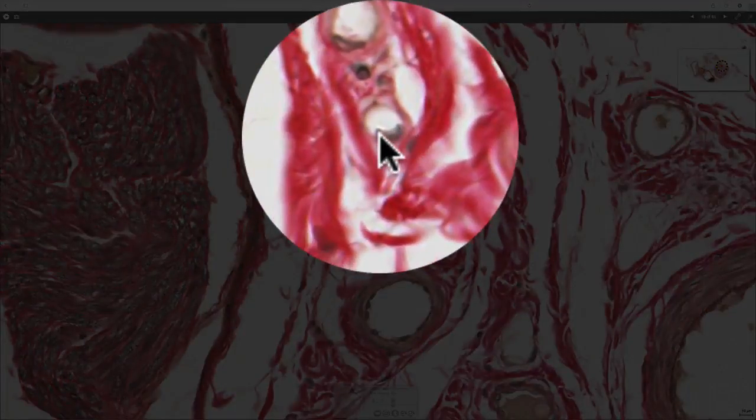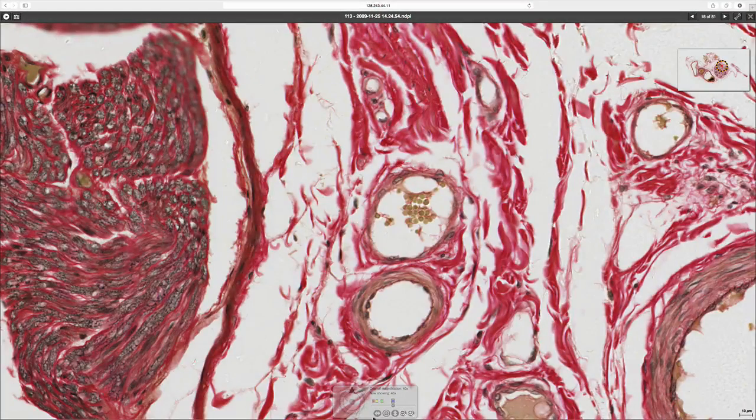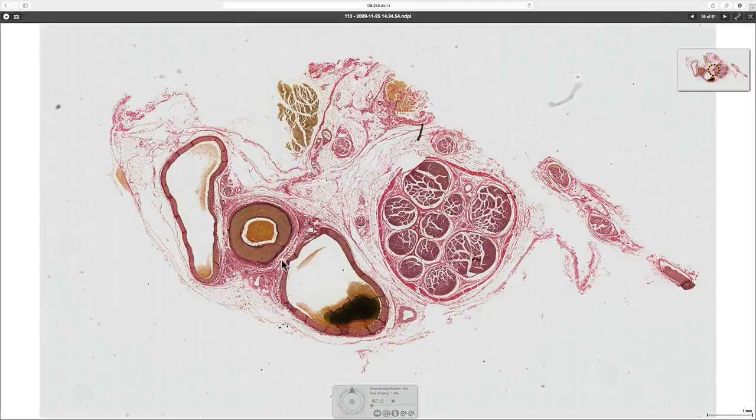So in summary, we have looked at an artery, we have looked at a vein, we have looked at a smaller artery, and we have looked at an arteriole and venule, and then we've also looked at the structure of capillaries.